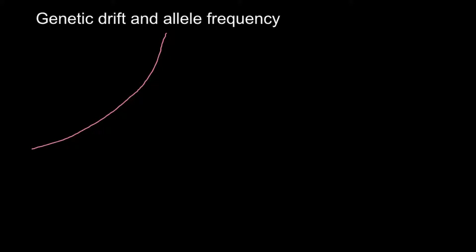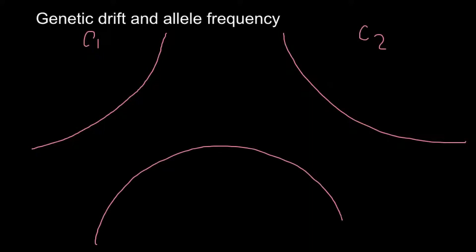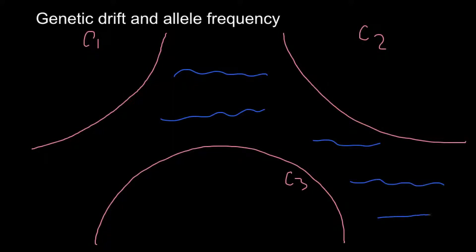Imagine this is community one, here is community two, and here is community three. All these communities are separated by water — you may imagine that these are three islands. Community one consists of only one person: a male with genotype capital A capital A, so homozygous dominant.